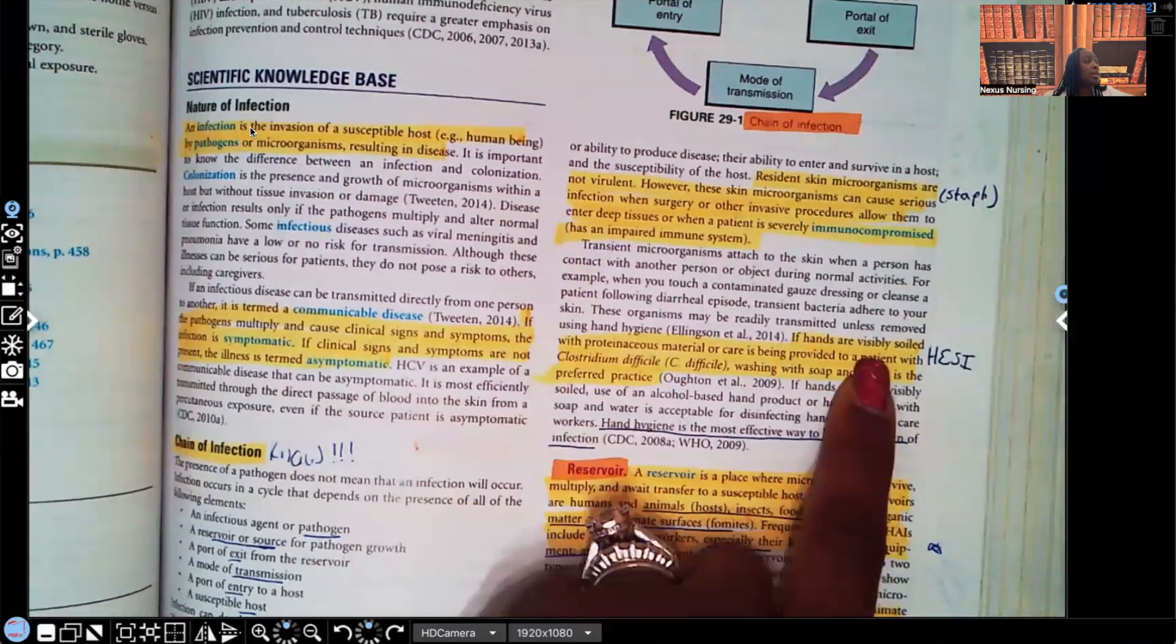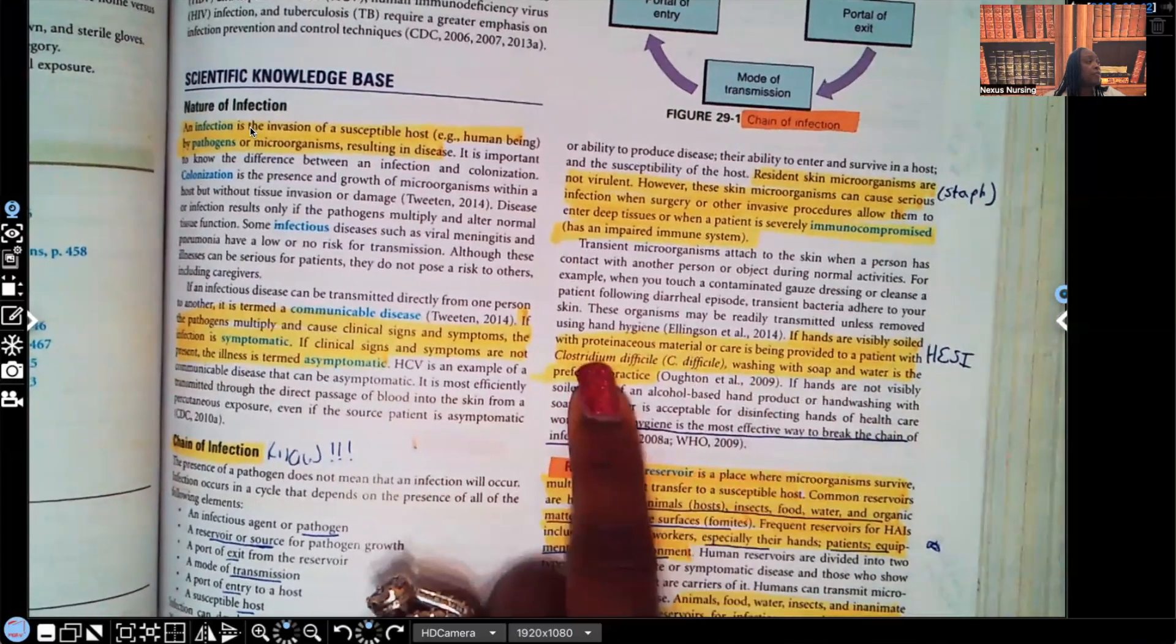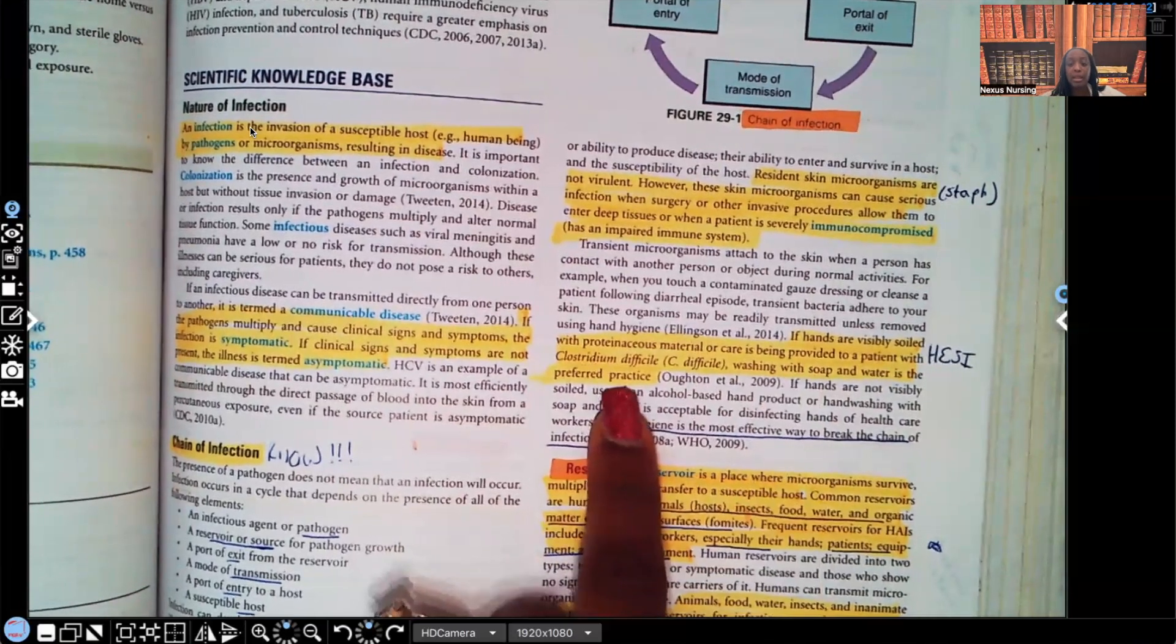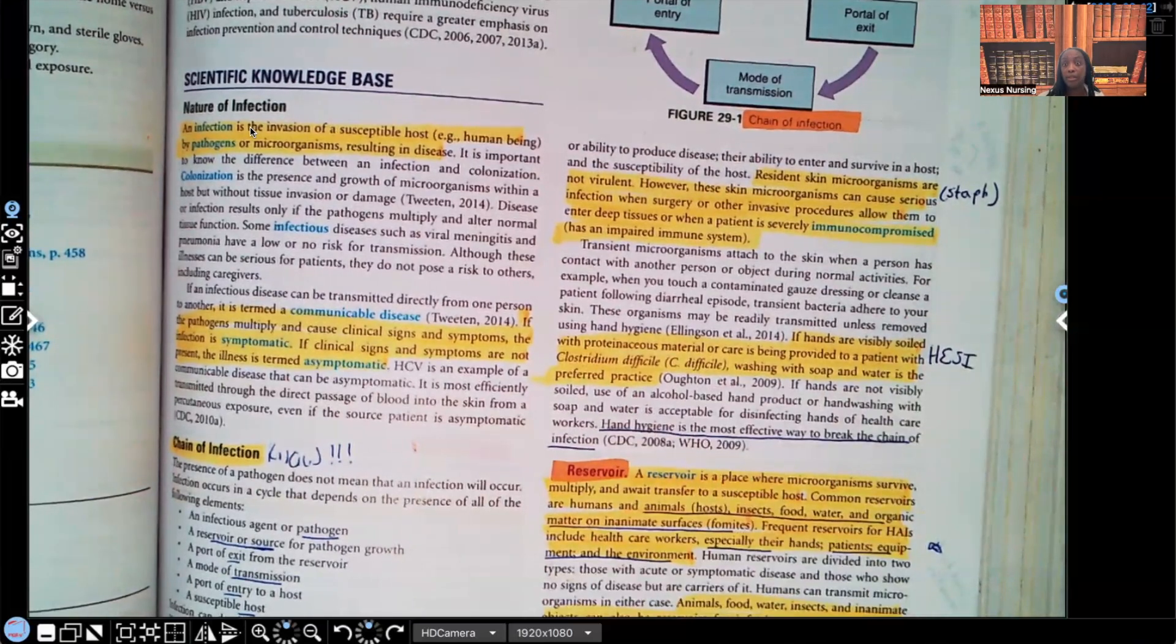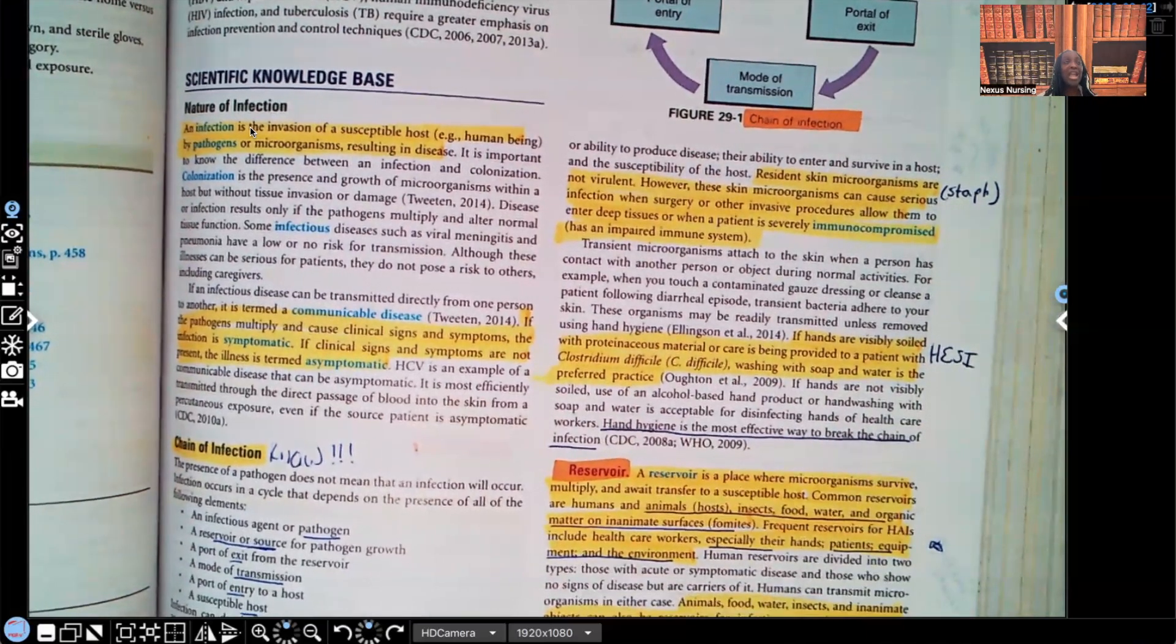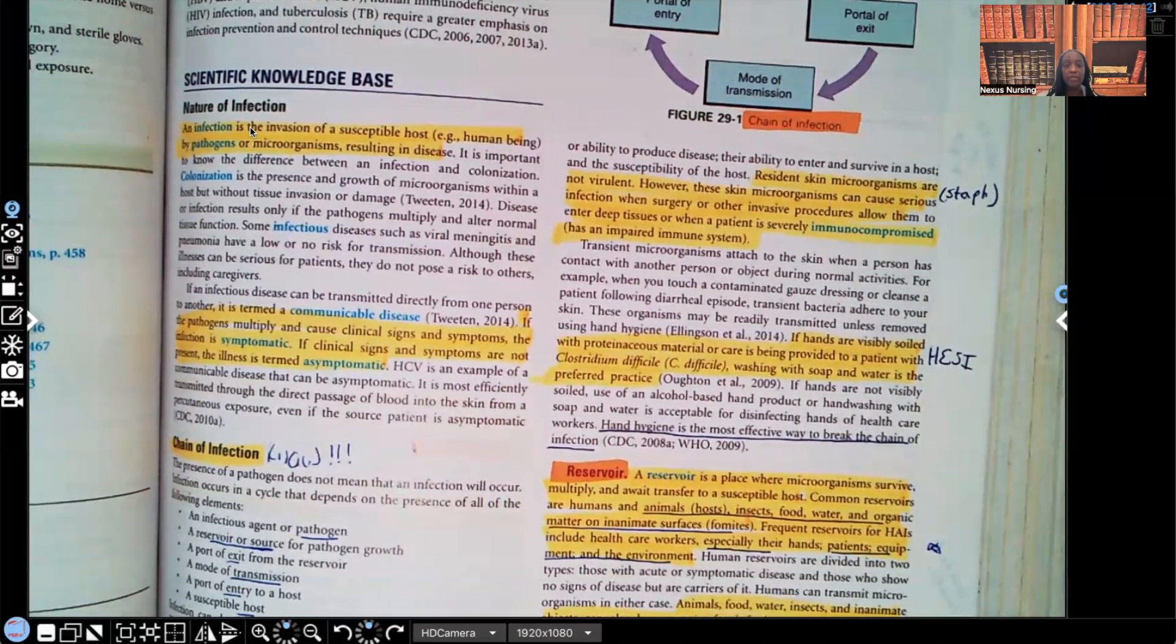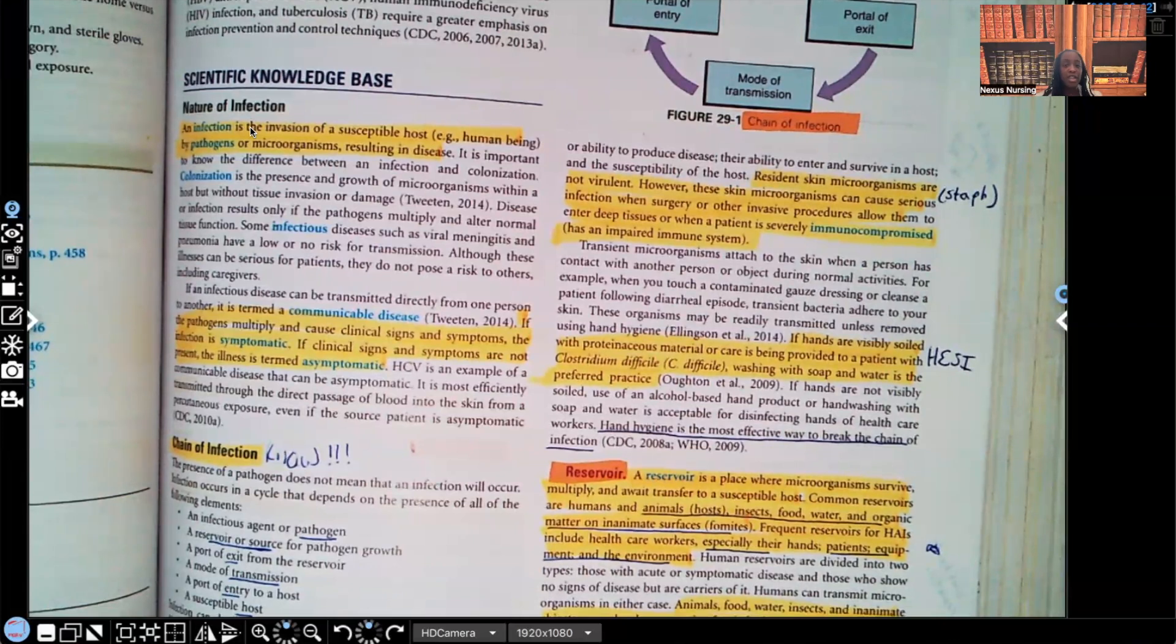Let's keep going. If the hands are visibly soiled with proteinaceous material or care is being provided to a patient with C. diff, washing with soap and water is the preferred practice, number one. And I put HESI there because, oh my goodness, this has been seen on HESI since at least 2015, as far back as I can remember. And it hasn't changed and you need to know this. Hand hygiene is the most effective way to break the chain of infection. It's always hand hygiene. Hand hygiene is the number one way to stop the transmission of infection. Number one, it's always going to be washing the hands with soap and water.